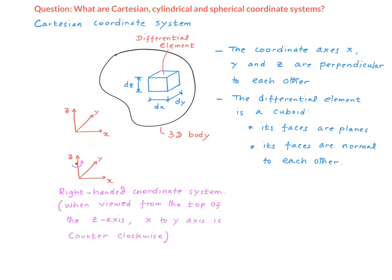If I were to look down on the three axes from the top of the z-axis, I will find that the x-axis to y-axis will be counterclockwise. So once you have selected the x and y-axis, the z-axis will have to be like this. It cannot be downward like that. So these are the basic characteristics of a Cartesian system.